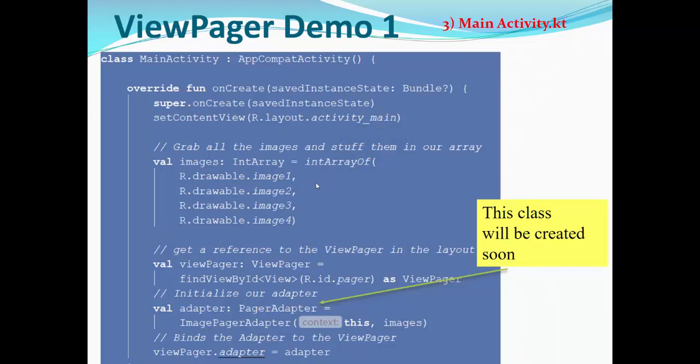In MainActivity Kotlin, we override onCreate method. After SetContentView, we grab all the images and stuff them in our array. Then we get a reference to the ViewPager in the layout using FindViewById. Then we initialize our Adapter, PageAdapter. This class will be created soon, and binds the Adapter to the ViewPager directly.